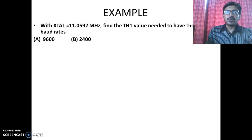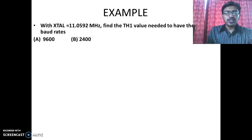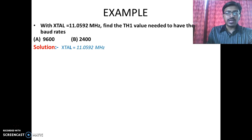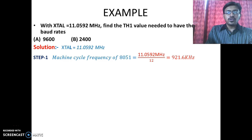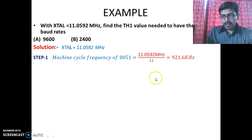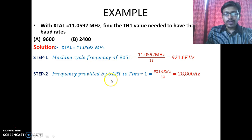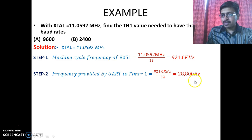Now we will see how to set the baud rate by using Timer 1 in Mode 2. Consider the crystal frequency is 11.0592 MHz and we are required to find out the value to be loaded into TH1 to set the baud rates of 9600 and 2400 respectively. The first step is to find the machine cycle frequency of the 8051, which is crystal oscillator frequency divided by 12, coming out to be 921.6 kHz. The next step is to find the frequency provided by the UART circuitry to Timer 1, which is machine cycle frequency divided by 32, giving us 28800 Hz.